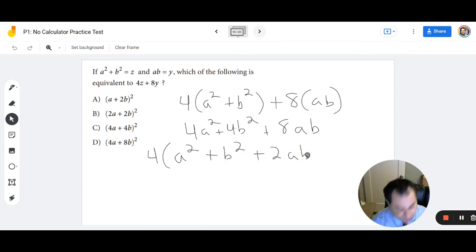And the reason why this problem is tricky is because you have to remember what a perfect square trinomial is. And what we have here, a squared plus b squared plus 2AB is one. So what we can do is we can factor this. And when I do, I get 4 times a plus b squared, which is B.